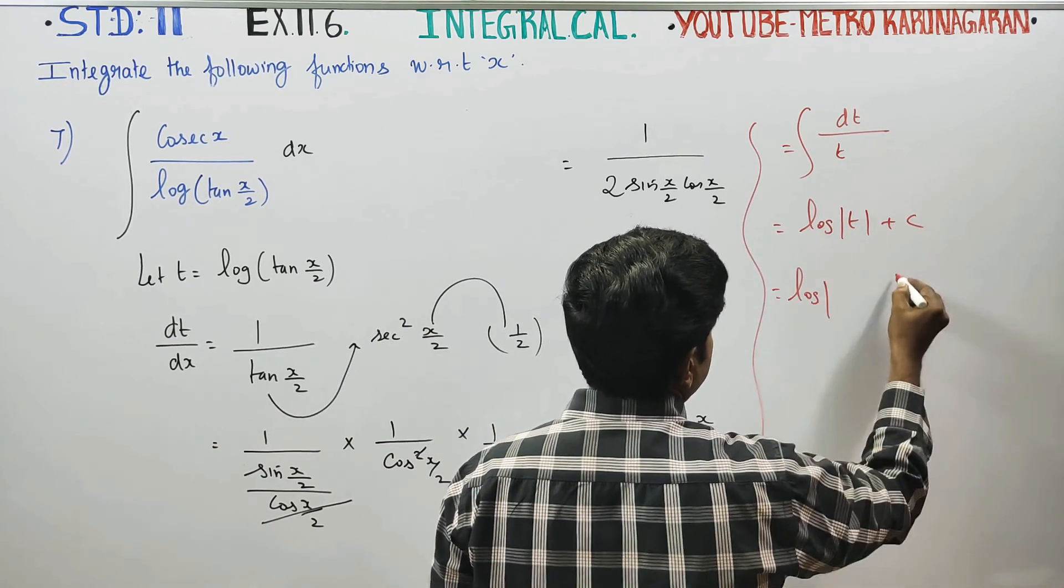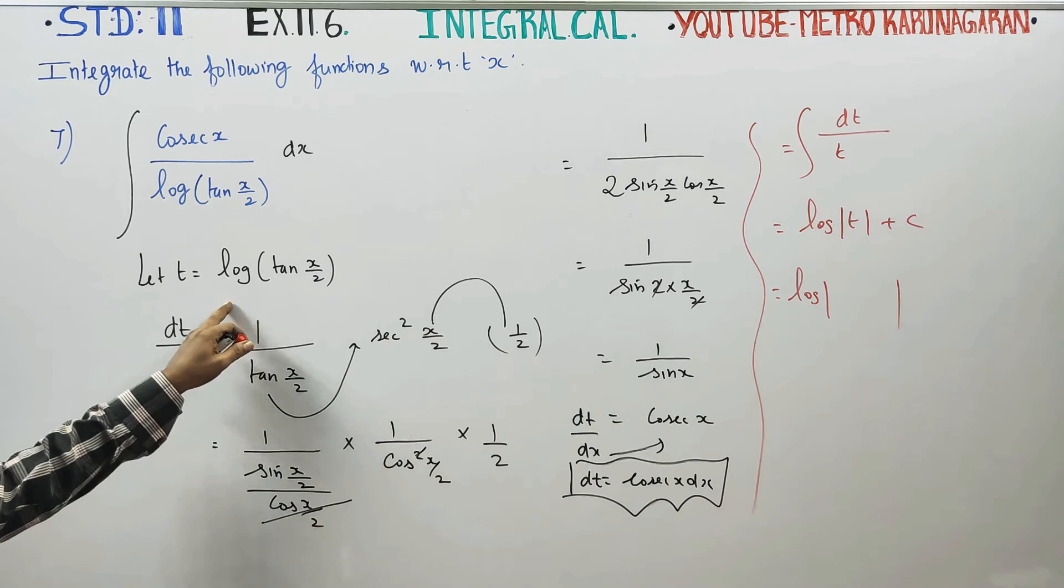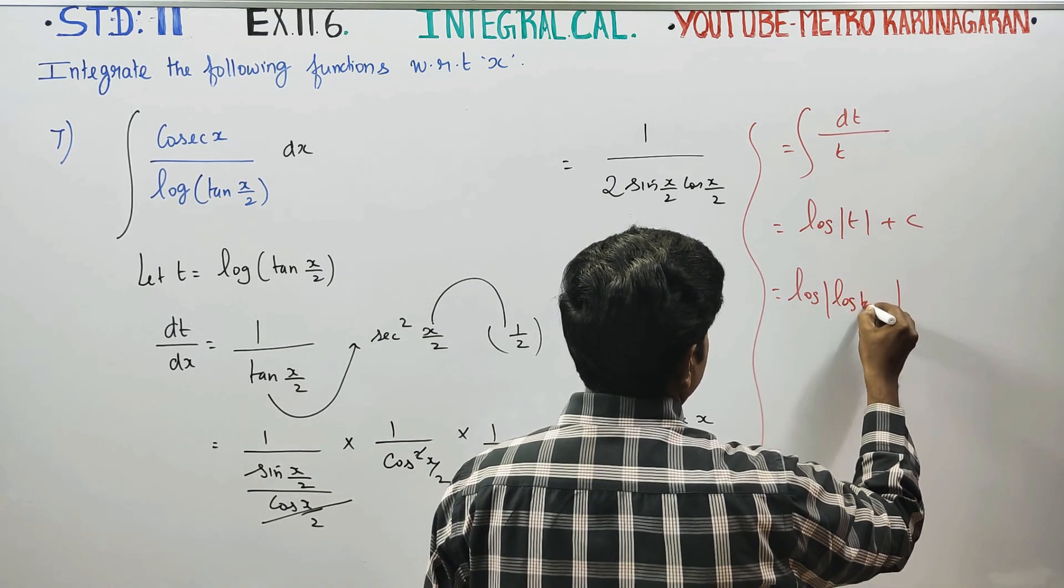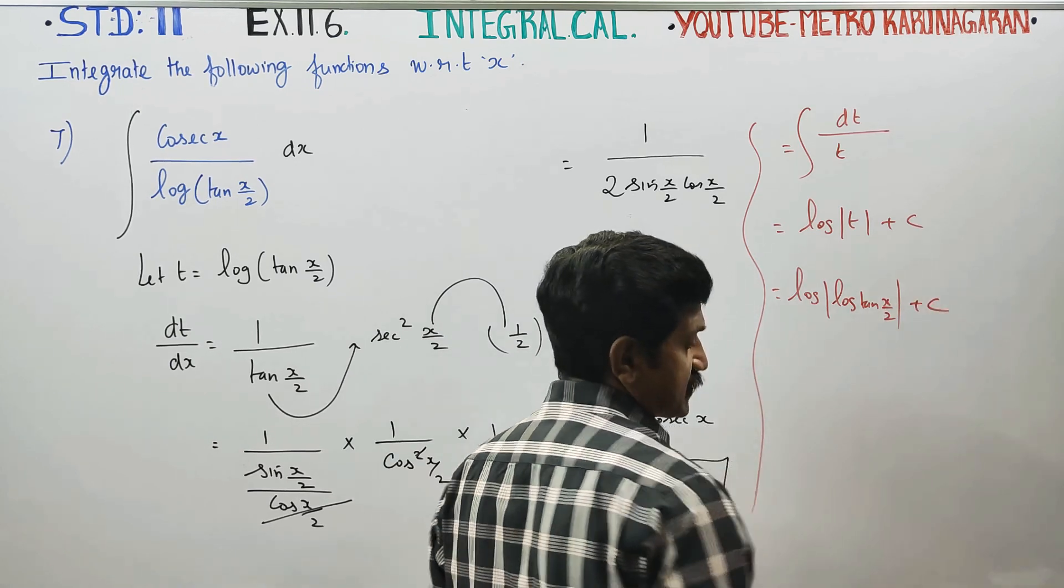Logarithm of what is my t? My t is logarithm of tan x by 2. So the answer is logarithm of logarithm of tan x by 2 plus c.